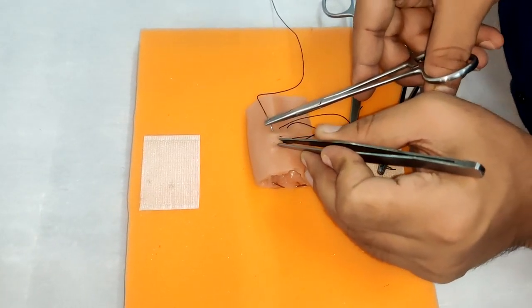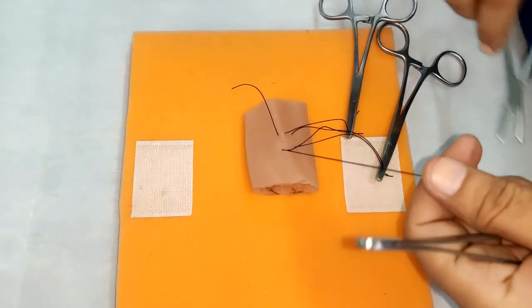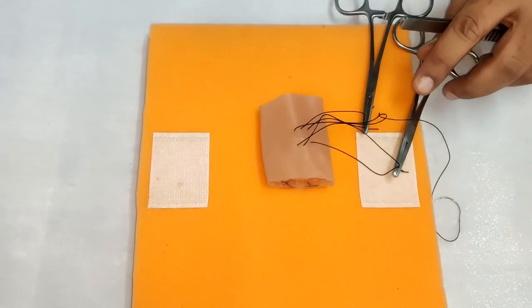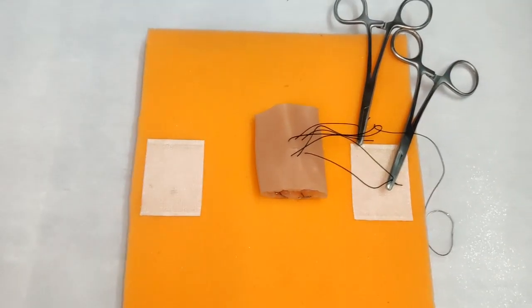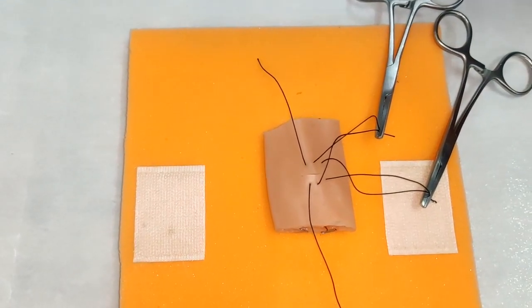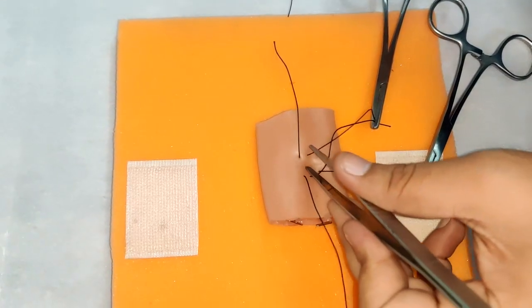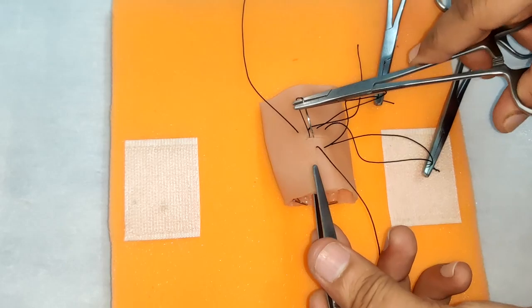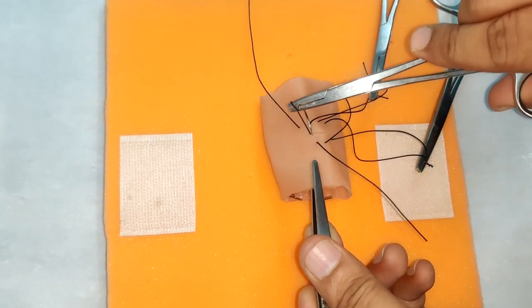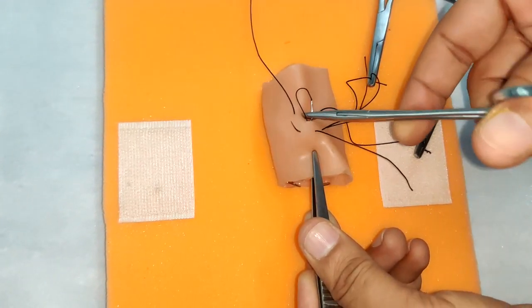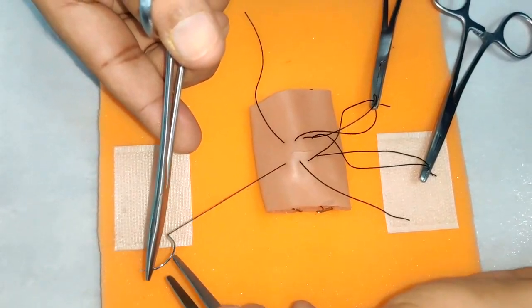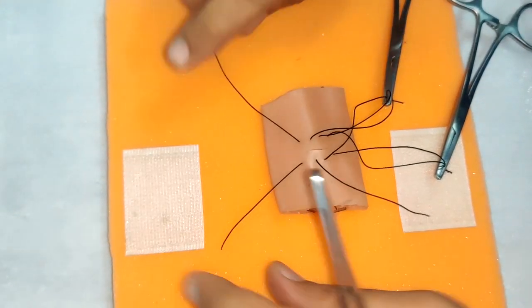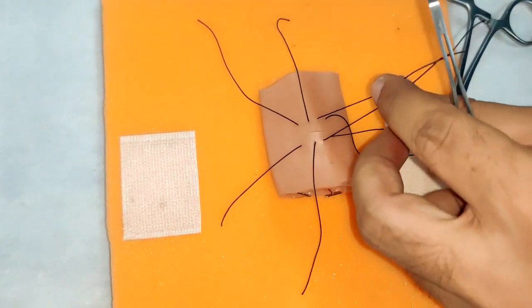And again hold it using an artery forcep and coming out from the other end. And one last suture that we will take, we will go from beyond and come out from the other end. So here we have our four layers of sutures.